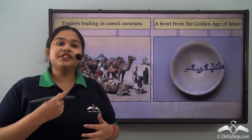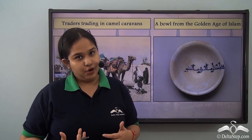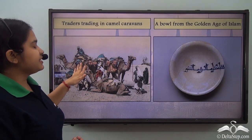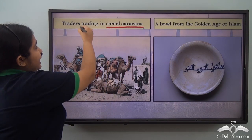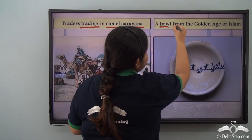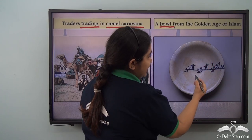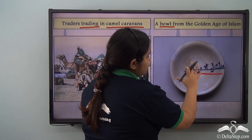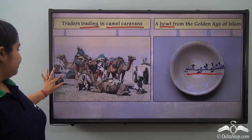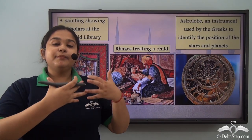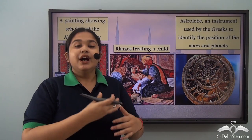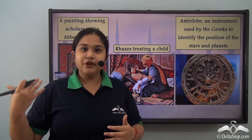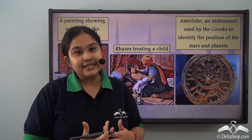Trade was an integral part of this society, and there were various items of trade — you can see the camel caravans they used to travel and trade to various places. You can also see a bowl from the Golden Age with calligraphy written on it, featuring only geometric patterns and calligraphy. Due to the intermixing of cultures and trade, people were also taking in ideas from various subjects, and we see the development of concepts of science, medicine, and mathematics in the Middle East.